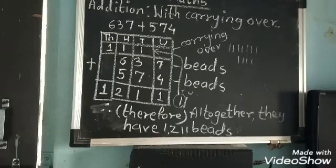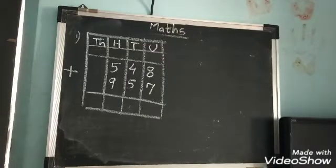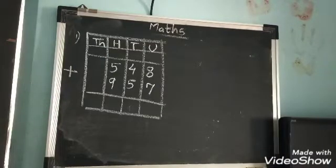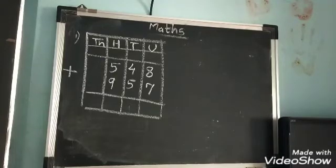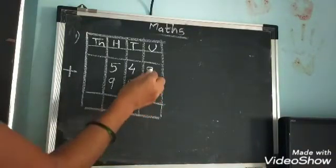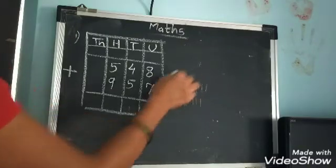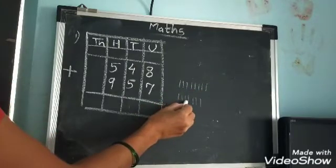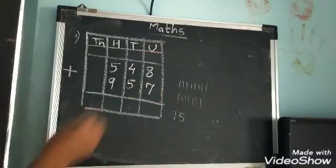Okay, next example. Open your maths textbook page number 19. There is one exercise with three examples. I will explain one here on the blackboard and the remaining examples you have to solve as homework. First example: 548 plus 957 — you have to add. The boxes are already given, just follow the steps. Always start from the units place. 8 plus 7 — draw lines: 1, 2, 3, 4, 5, 6, 7, 8 plus 1, 2, 3, 4, 5, 6, 7 — count together: 1 through 15. The answer is 15. We cannot write 15 as-is — only one digit per place. It is the units place, so write 5 here.